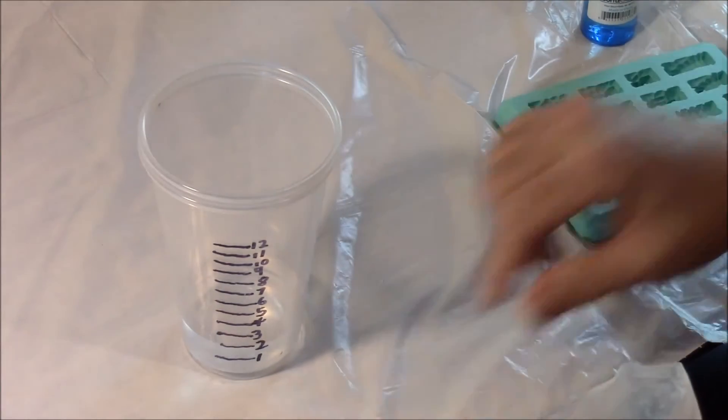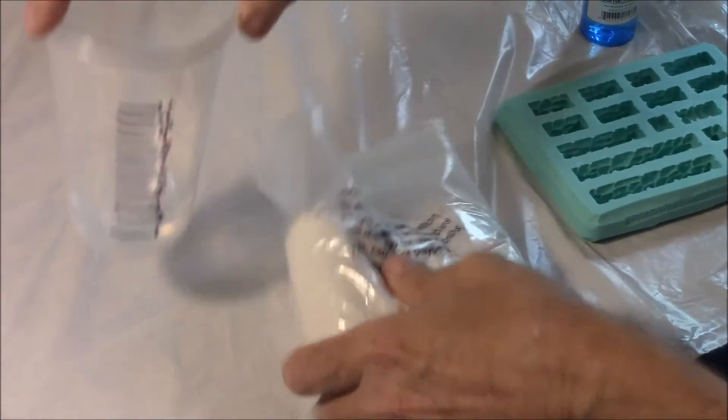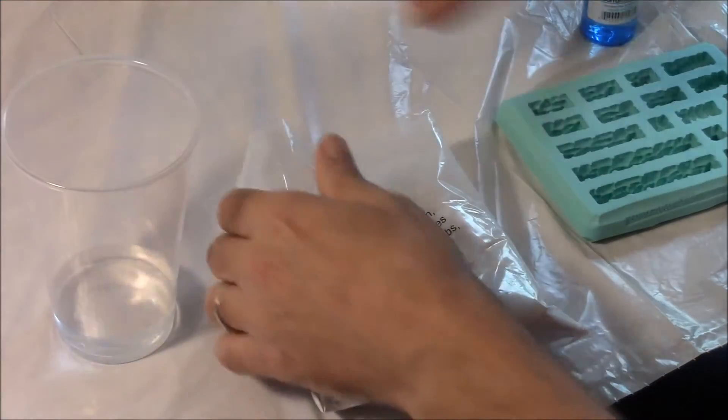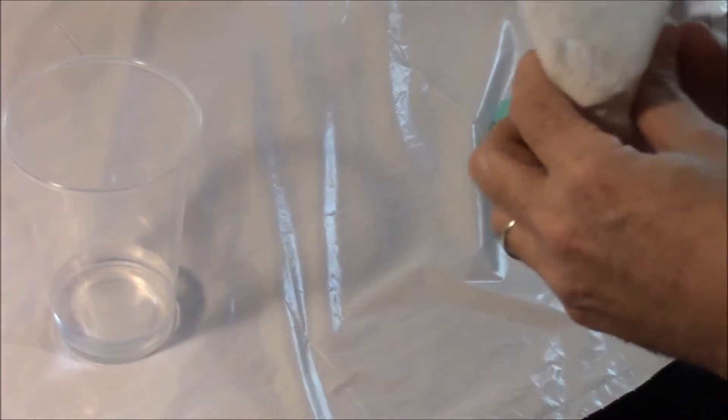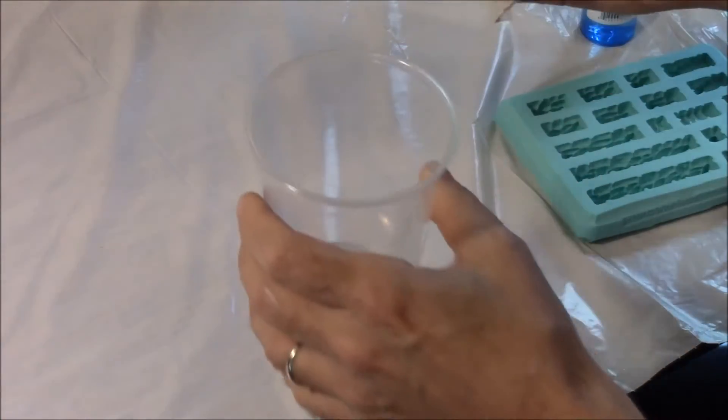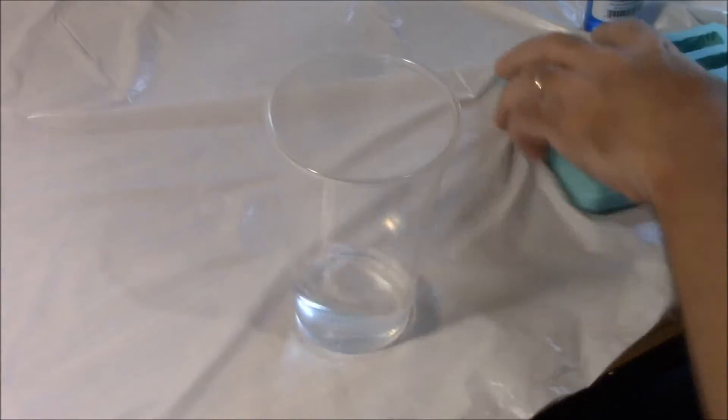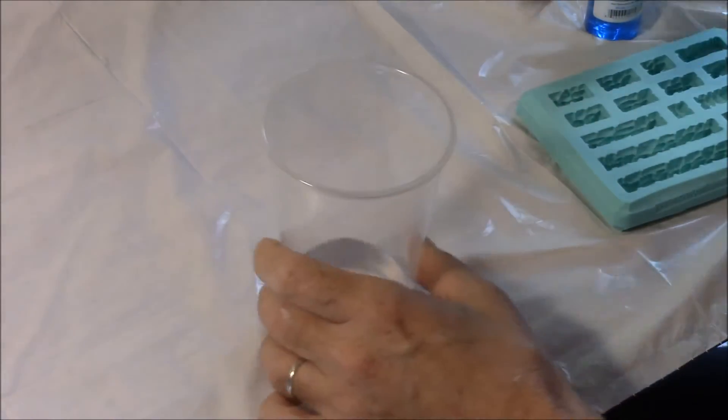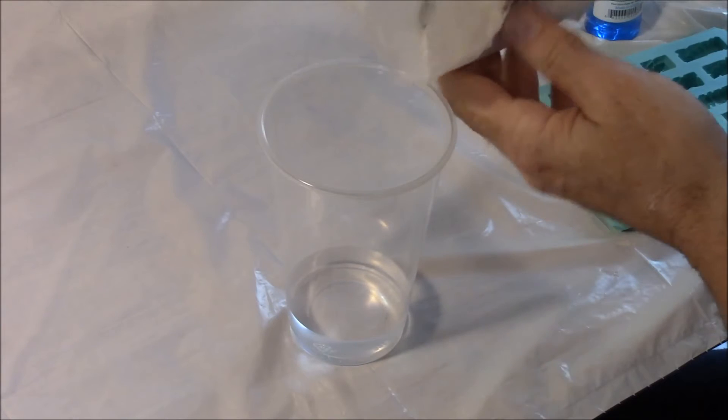So we have 2 ounces of water in this cup. I'm going to set that aside, and we're going to start sprinkling this powder into the cup. Now let's see if I can get a close-up view. Let's just start right here. Okay, let's start sprinkling the powder in.